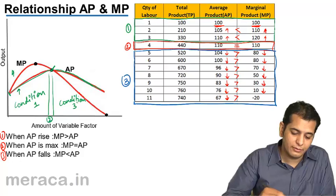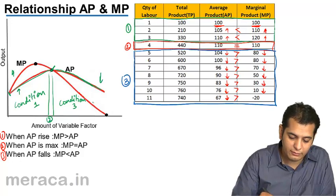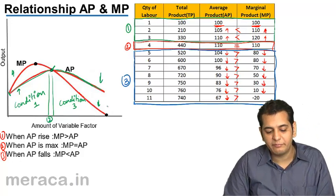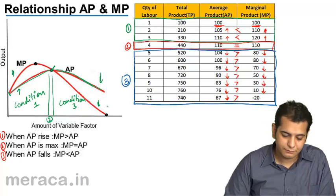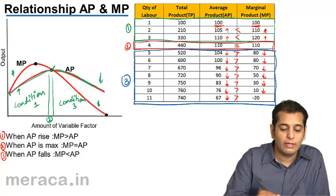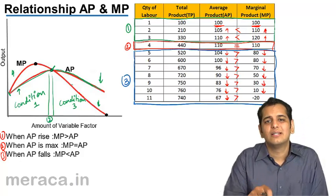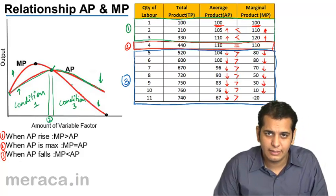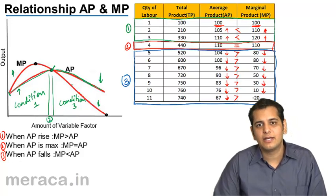wherein both are falling. AP and MP both are falling. What happens at this stage is, now MP becomes less than AP, MP becomes less than AP.